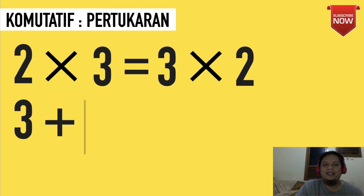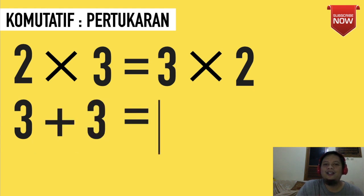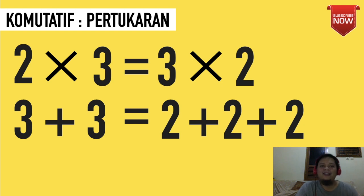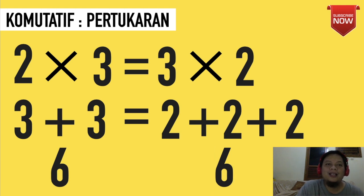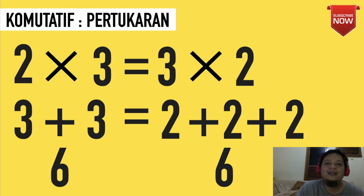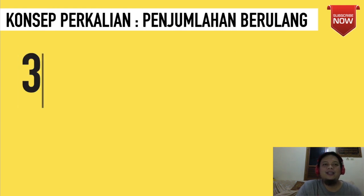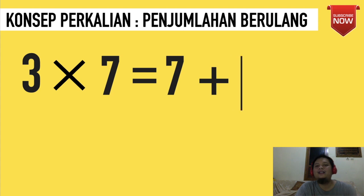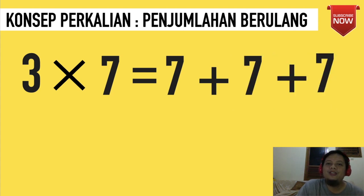2 kali 3 itu artinya 3 ditambah 3. Sedangkan 3 dikali 2 artinya 2 ditambah 2 ditambah 2. Ini baru konsep yang benar. Dua-duanya menghasilkan angka yang sama, yaitu 6. Jadi kalian harus paham bahwa dalam perkalian ada yang namanya sifat komutatif atau pertukaran.